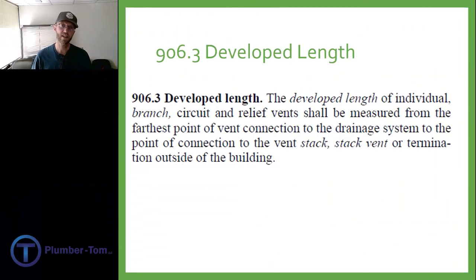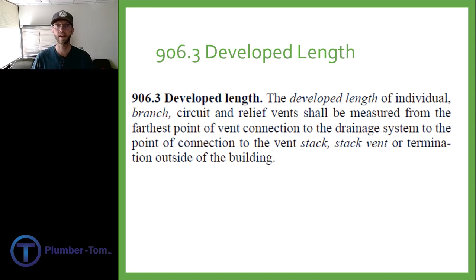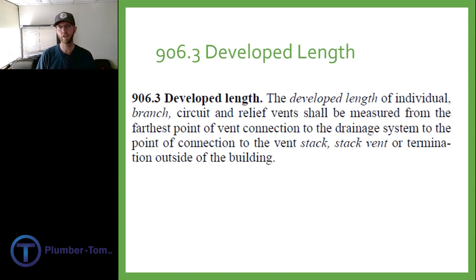Let's focus on the definition of developed length. Section 906.3 says the developed length of an individual branch circuit and relief vents shall be measured from the farthest point of the vent connection to the drainage system to the point of connection to the vent stack, stack vent, or termination outside the building. So we can measure individual vents from the point where they connect to a drain to wherever they terminate — that termination could be a stack, a vent stack, or it could go outside.